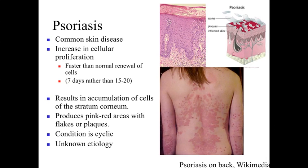Psoriasis is a relatively common skin disease that's associated with an increase in cellular proliferation. Skin cells are being produced at faster than normal rates. What happens then is we're going to start to see an accumulation of skin cells rather than that normal sloughing off. They're still going to be sloughed off, but we're going to see this thickened region in the area where we've got psoriasis because we're going to be accumulating lots and lots of cells within the stratum corneum. It's going to be characterized by pinkish or reddish flakes or plaques within an area — an accumulation of cells within the stratum corneum because we're producing cells at a much faster rate than normal.